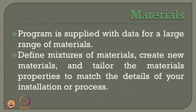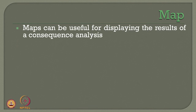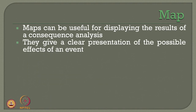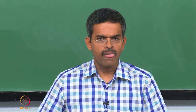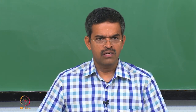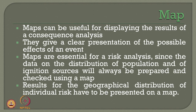The software defines mixtures of materials, creates new materials, and allows you to tailor material properties to match the installation details of the process plant. Mapping is very important because maps are useful for displaying results of consequence analysis, giving a clear presentation of possible effects of a given event. Maps are essential for risk analysis since population distribution data will always be prepared and shown as graphical output. Results are available as a geographic distribution of individual risk, generally plotted on the map itself.